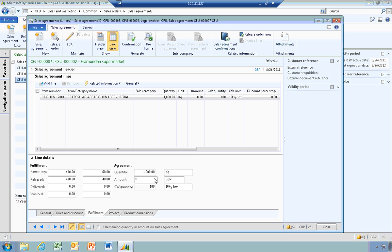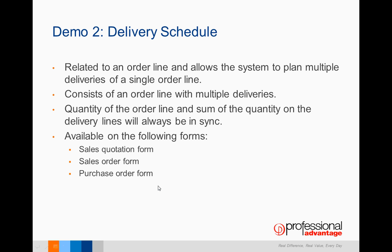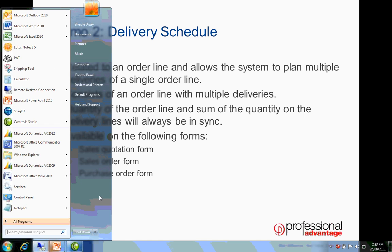It shows that the actual catchweight is 110 kilo boxes. Next, I'm going to show you delivery schedules, which are basically related to an actual order line and allow the system to plan multiple deliveries for a single line. We can go into that single line and dictate to the system when we would actually like delivery. Quantities of the order line and the sum of the quantity on the delivery lines will always be in sync. This is available on the sales quotation form, sales order, and purchase order form.